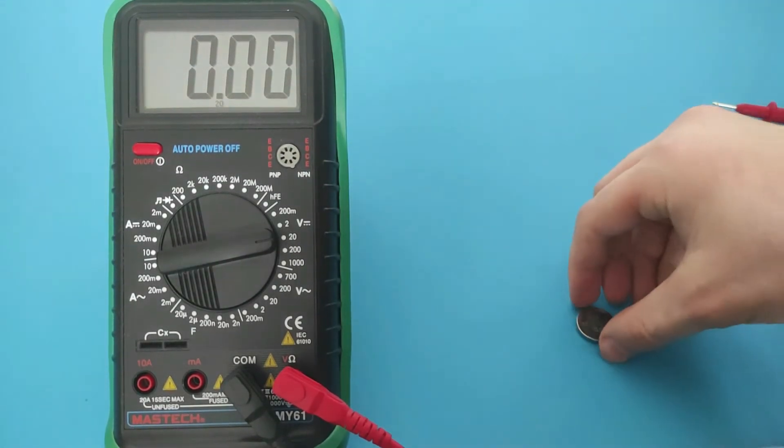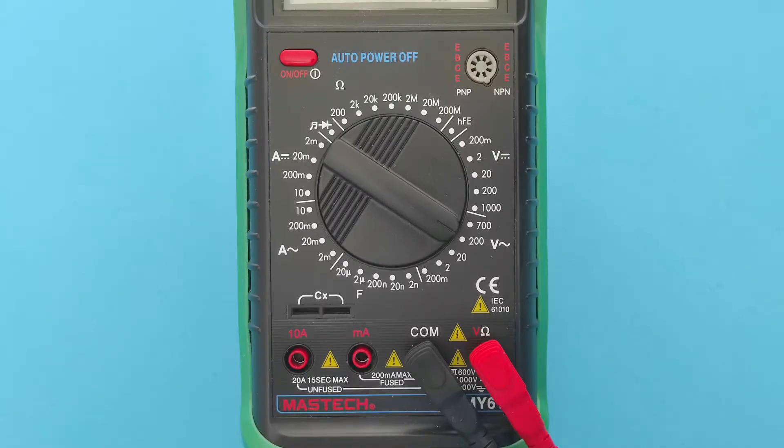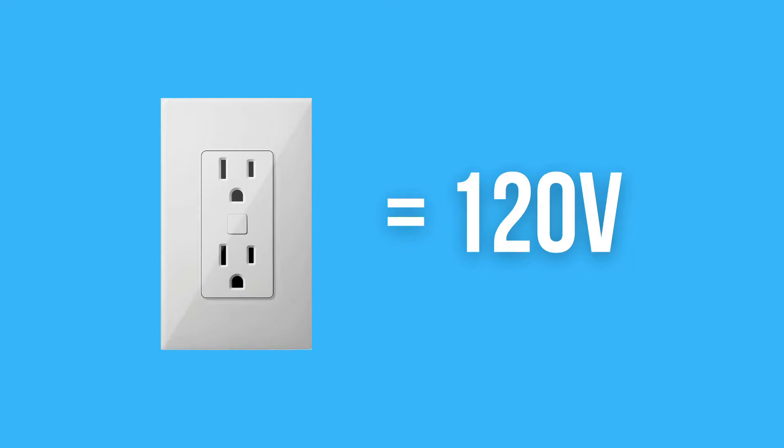Set to the largest range. Push the two ends of the probe into the outlet. You'll see about 120 volts. Don't worry if there are minor differences. Up to 10 percent is expected. Be careful, 120 volts is dangerous. You should know that AC voltage has no polarity. It doesn't matter what probe you put in which way.